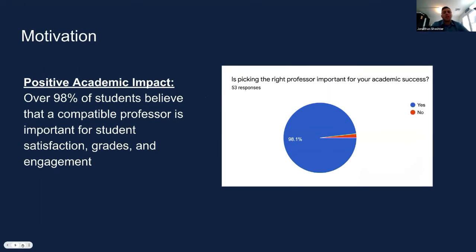Our main motivation to help students find the right professor for them stems from our needs as students. We wanted to see if our peers felt this way as well, so we conducted a student survey and found that over 98% of students felt that choosing the right professor is important for their academic success. This all correlates back to student satisfaction, higher grades, and higher student engagement. Our proposed solution hopes to have this high positive academic impact for students' long-term goals.